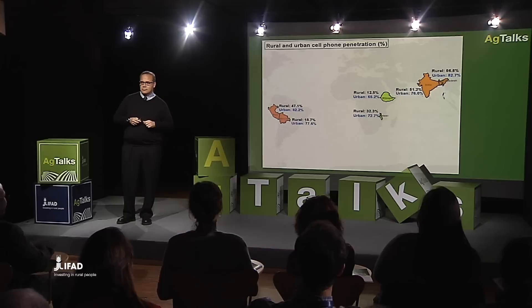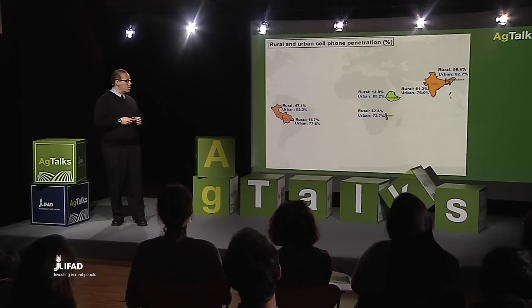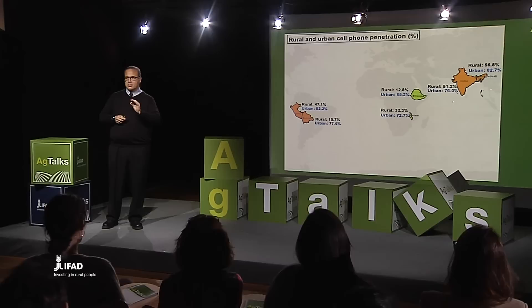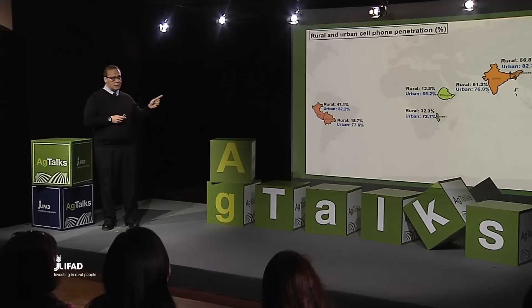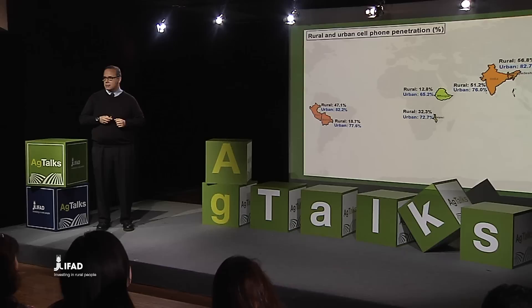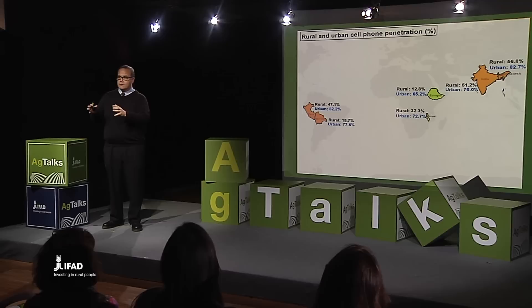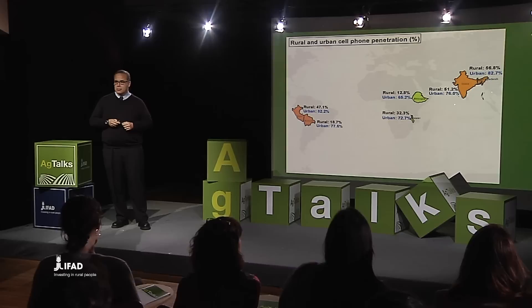I'm bringing two countries per continent, randomly selected. The idea is to show that rural penetration is not as good as we expected — and this is a number you normally won't see. Normally, the telecoms unit will give you the global number at the country level. For example, Bolivia has 18.7 phones per 100 rural inhabitants, while urban penetration is 77. In Malawi, 32.3 in rural areas. Even in Bangladesh — the country of Grameen Bank and Yunus, who won the Nobel Prize linking women farmers to microfinance using cellular phones — there are 56 phones per 100 rural inhabitants. Clearly, we still have an access gap.